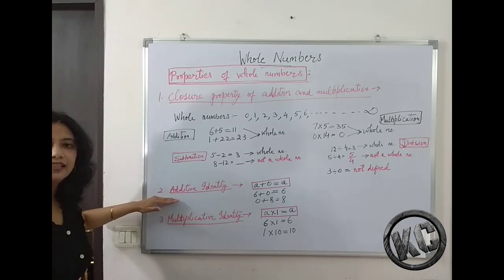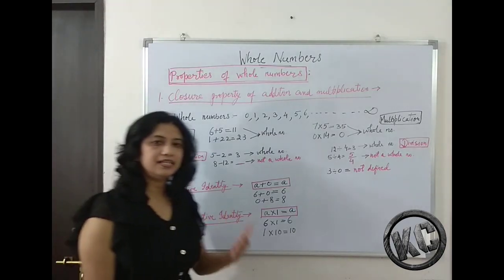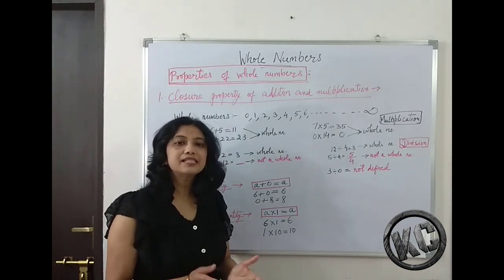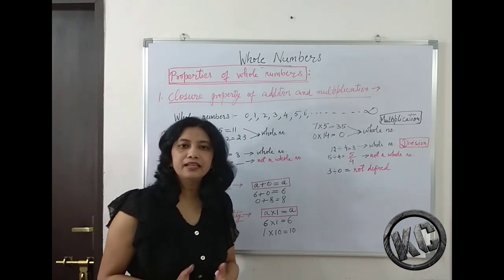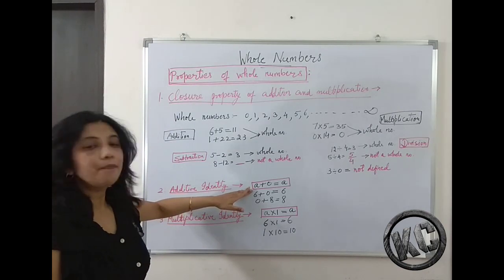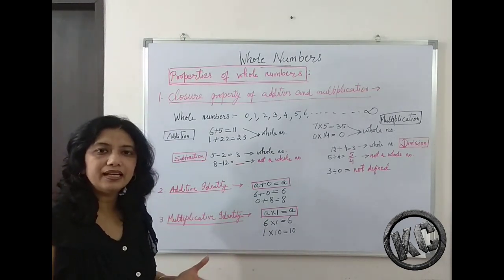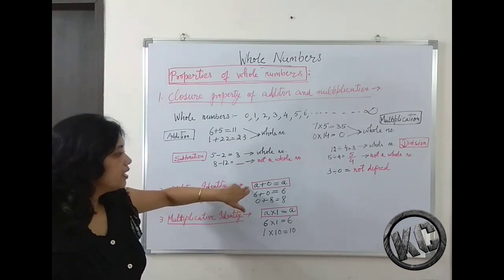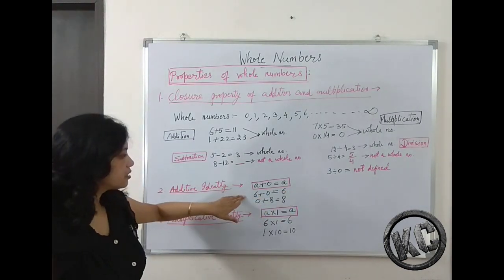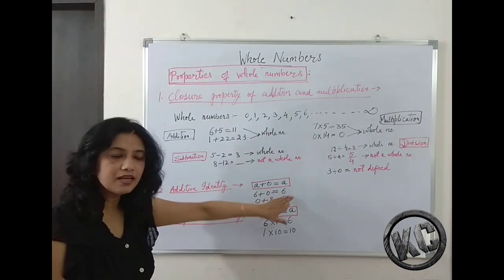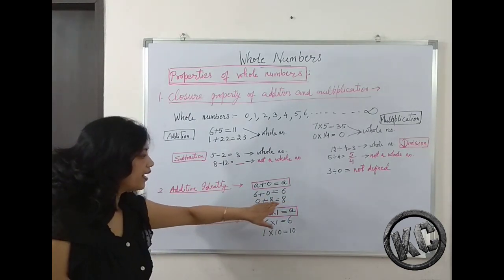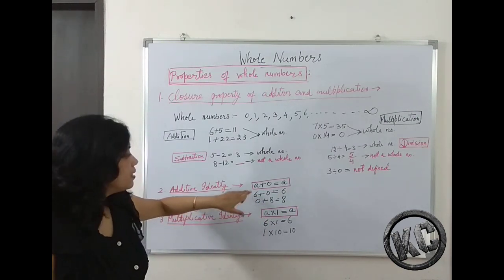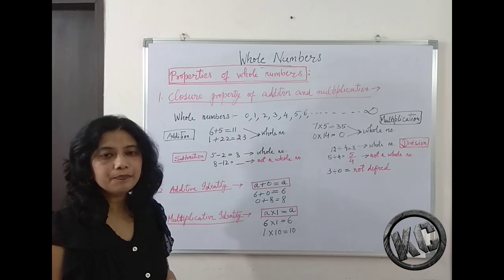Now let us take the second property: additive identity. That means, which number can you add to any whole number so that its identity remains the same? If you add 0 to any whole number, the number remains the same. Adding 0 to 6 gives 6, and adding 0 to 8 gives 8. The identity of the number does not change. So 0 is called the additive identity of whole numbers.